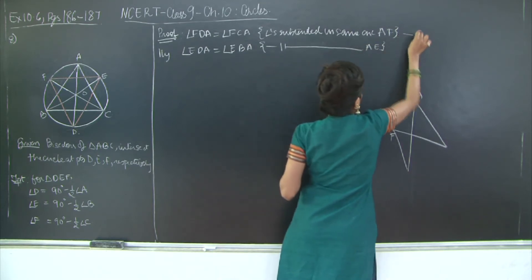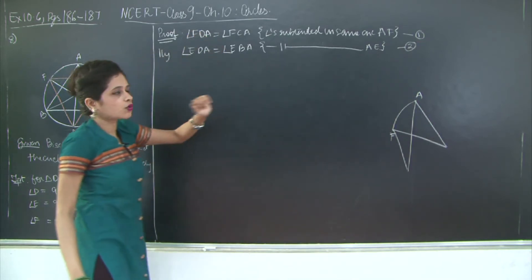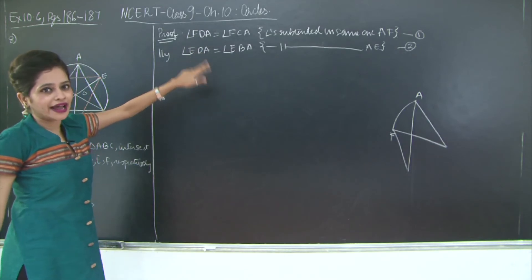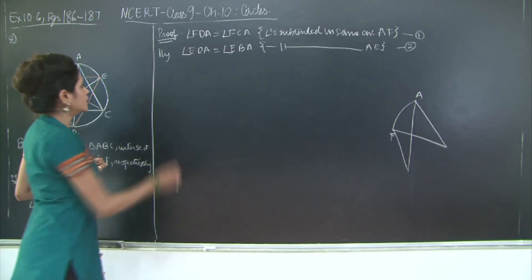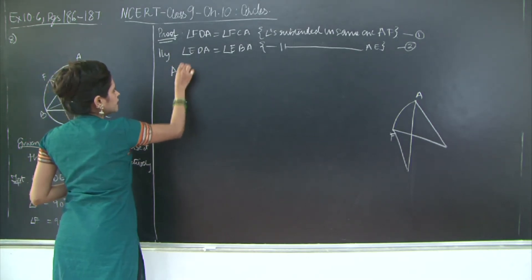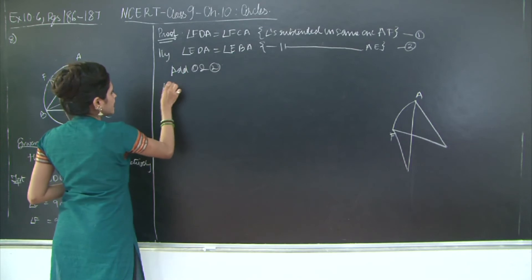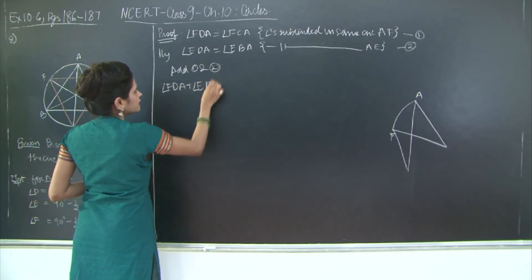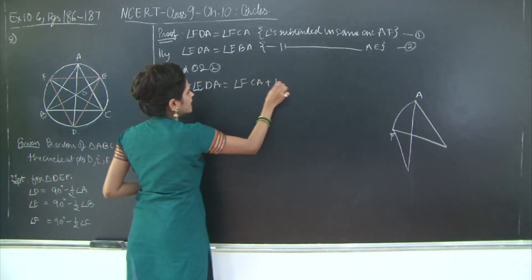Let's mark these points as 1 and 2. Now you must be wondering why did I take these two arcs and these two angles? Because if you notice, FDA and EDA when you add them together you get the angle D of triangle DEF. So I will say adding 1 and 2, I get angle FDA plus angle EDA is equal to angle FCA plus angle EBA.